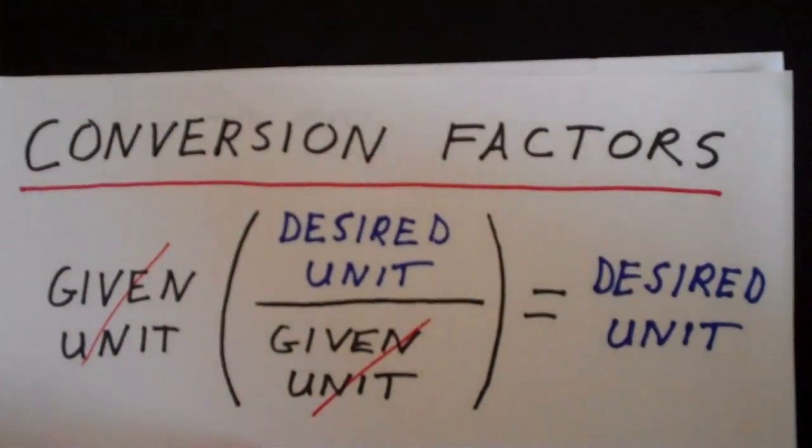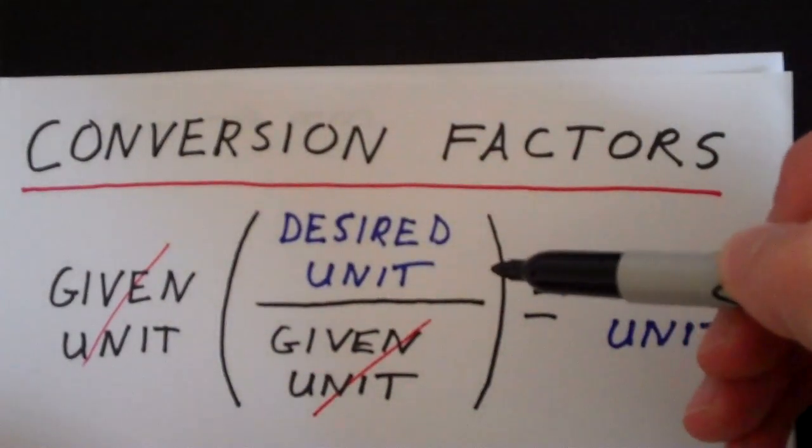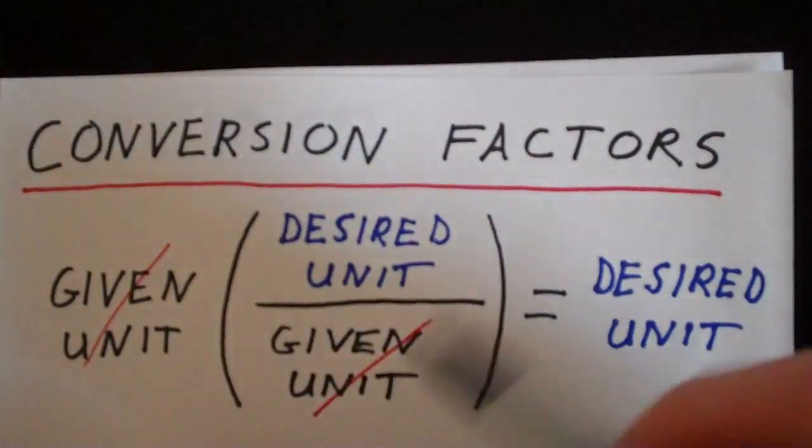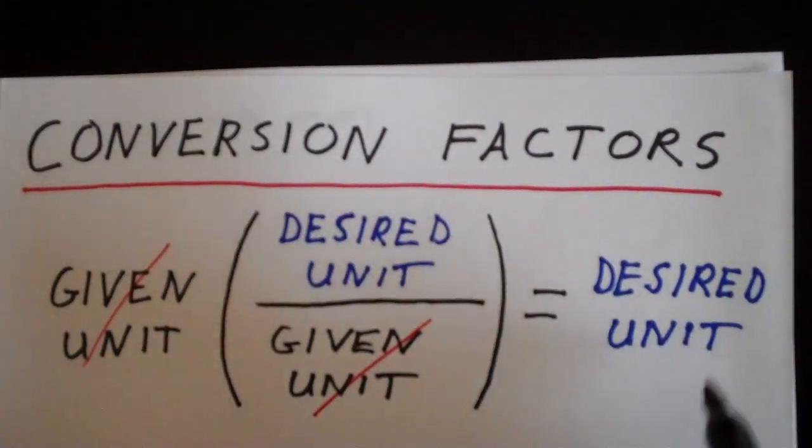In the conversion factor, what we do is we multiply by the desired unit and divide by the given unit. The given units cancel out and we'll end up with nothing but the desired unit.